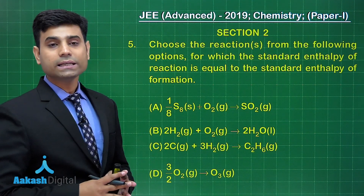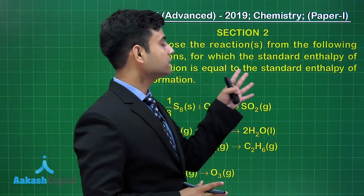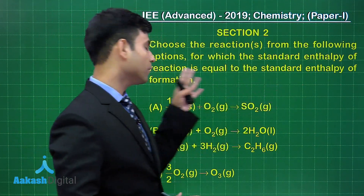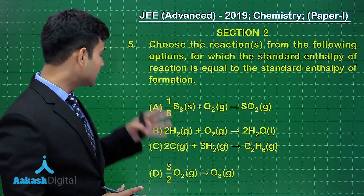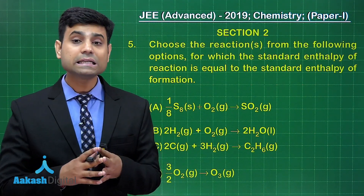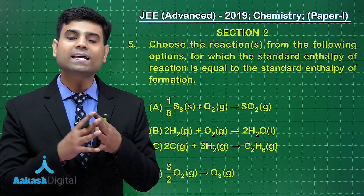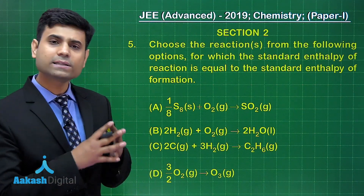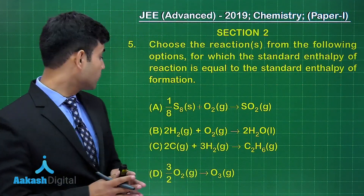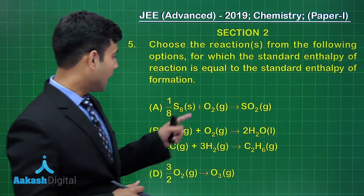The next question is from the thermodynamics chapter. It says: choose the reaction or reactions for which the standard enthalpy of reaction equals the standard enthalpy of formation. The standard enthalpy of formation is the enthalpy change when one mole of a substance is formed from its constituent elements in their elemental states. Option A has SO2 — one mole of SO2 is formed from S8, the standard state of sulfur, and oxygen.